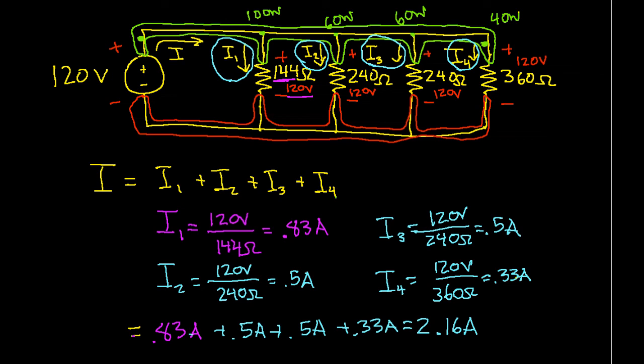However, that's not true. The current through a resistor will depend on the value of the resistor. That's why I1 is the largest current. The 144 ohm resistor is the smallest resistor. That's why I4 is the smallest current. The 360 ohm resistor is the largest.